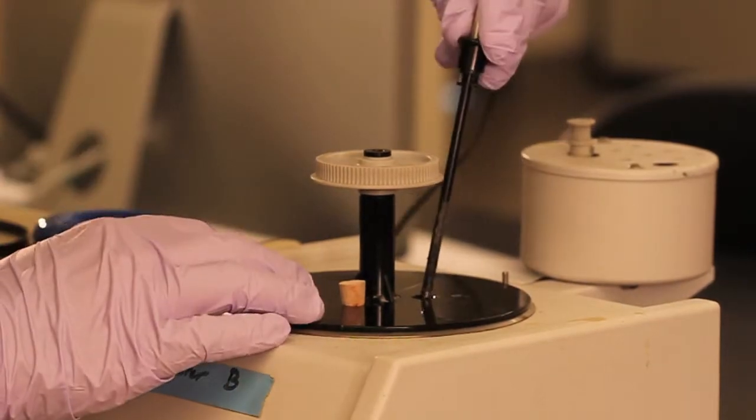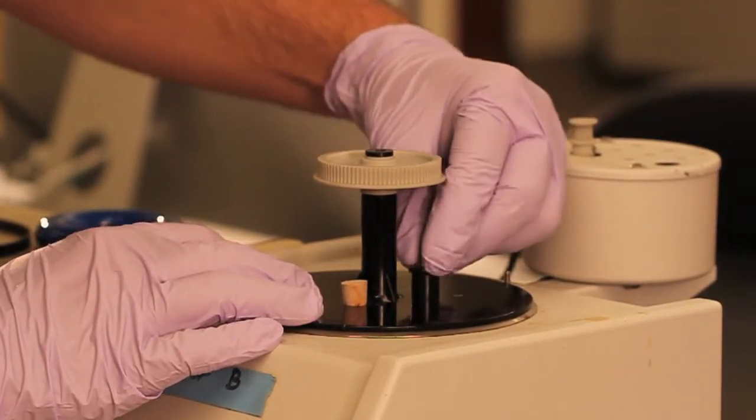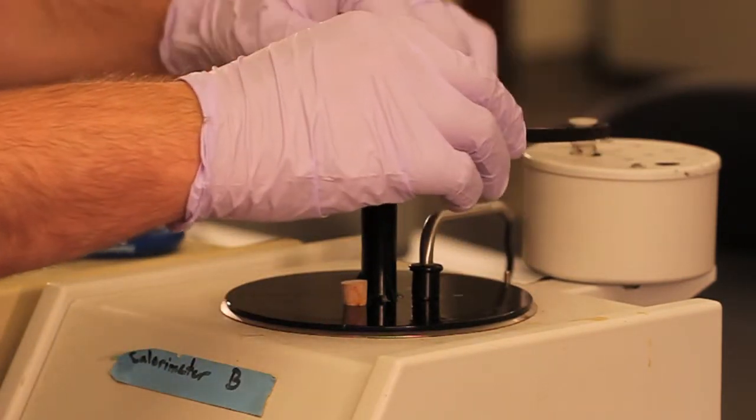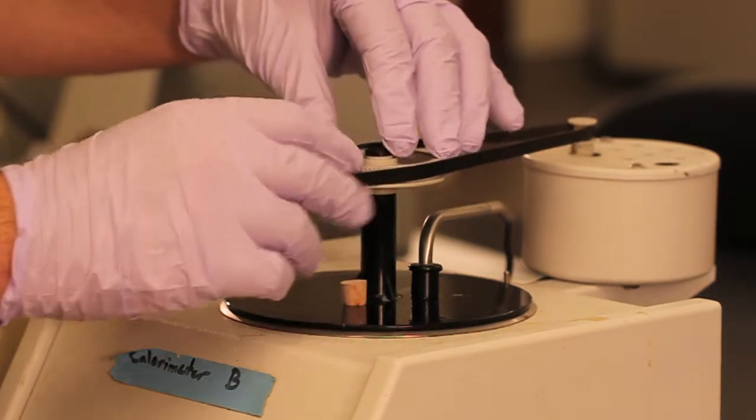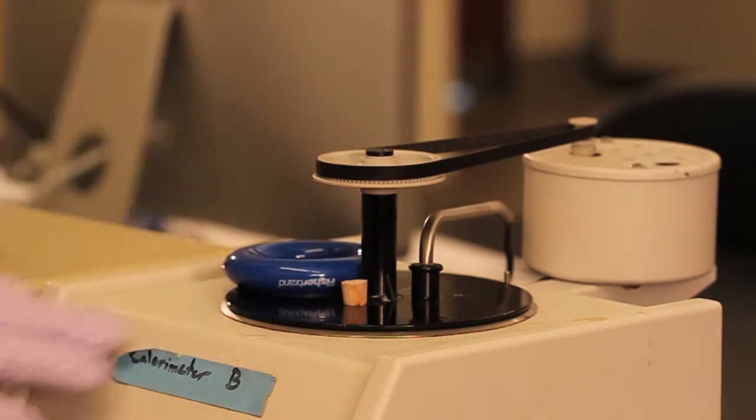Put the precision thermocouple through the hole and into the Dewar. Next, slide the belt over both pulleys.